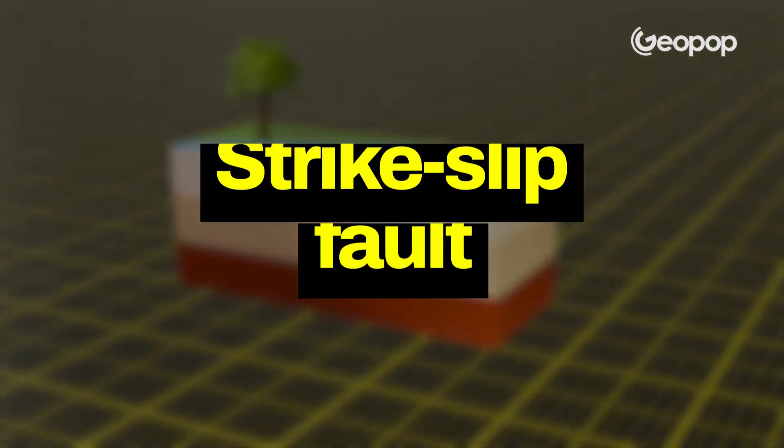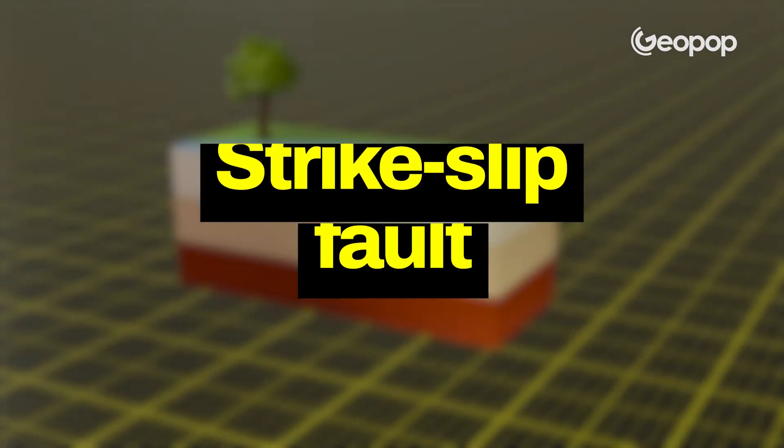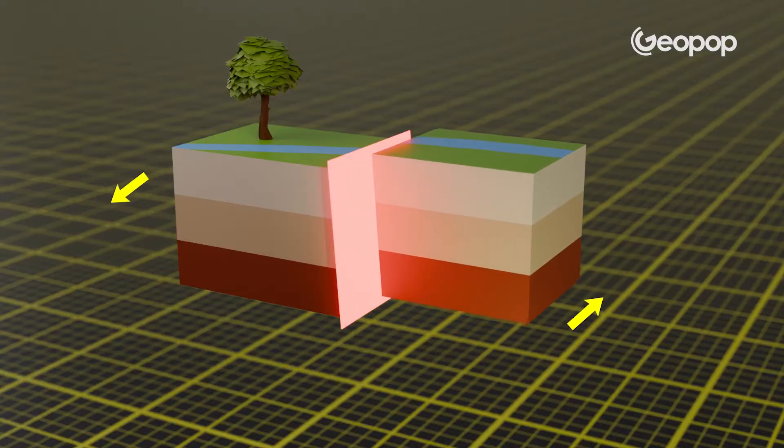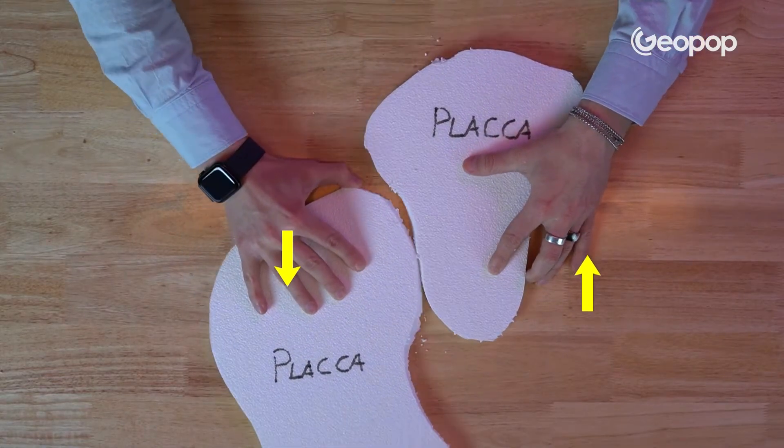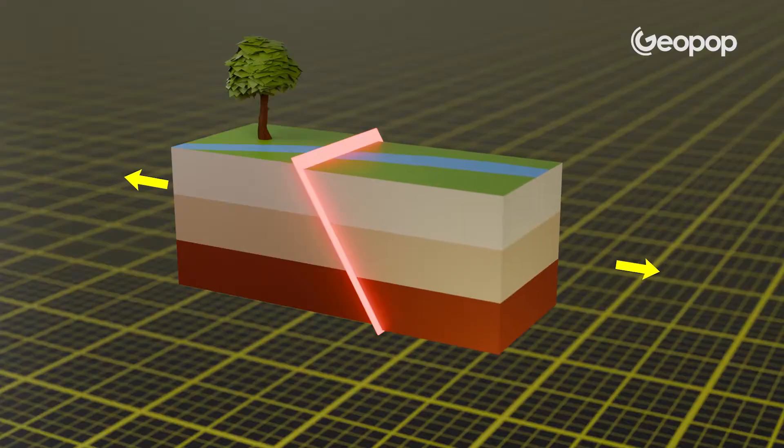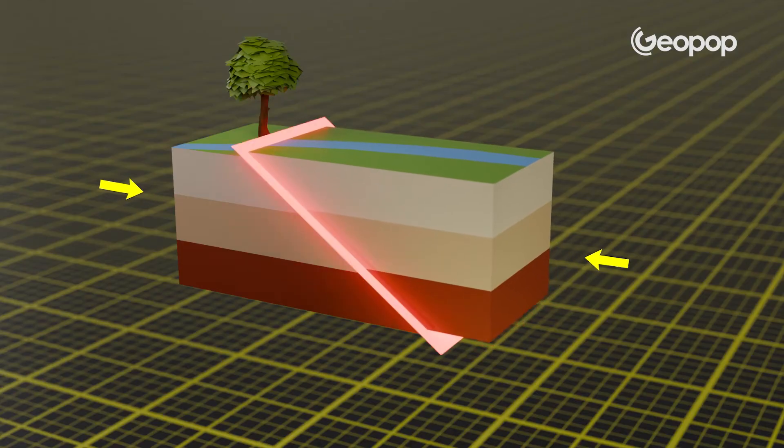The third type is strike-slip faults, where the hanging wall movement isn't up or down but rather a lateral movement — the walls scrape past each other. If I have a pure strike-slip fault with only lateral movement and no upward or downward component, then neither elevations nor depressions will result. In reality though, nature is incredibly complex. Faults are rarely just normal or just reverse — there's almost invariably a lateral component, almost always a bit of sideways movement going on.